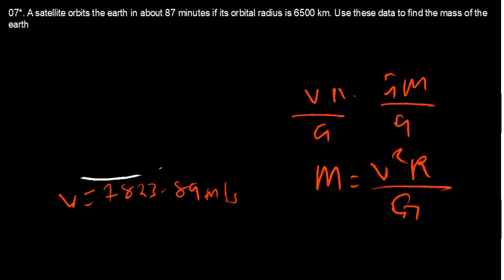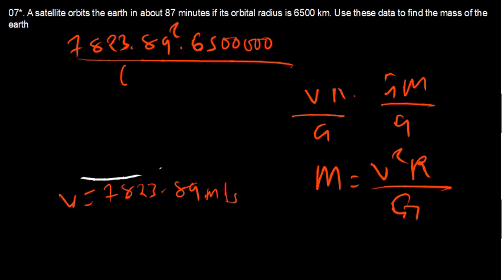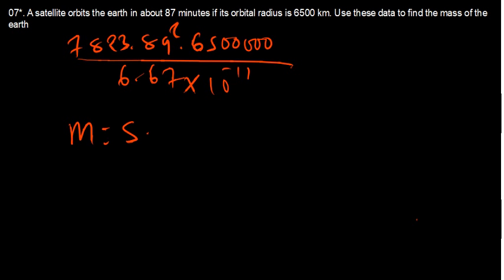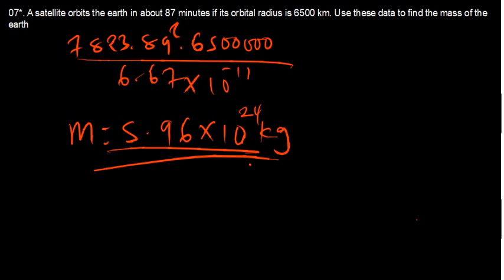Plugging in the values: V is 7,828.89 squared, times R which is 6,500,000 meters, divided by G which is 6.67 times 10 to the power of negative 11. Solving this gives the mass of the Earth as approximately 5.96 times 10 to the power of 24 kilograms. Simple, right?